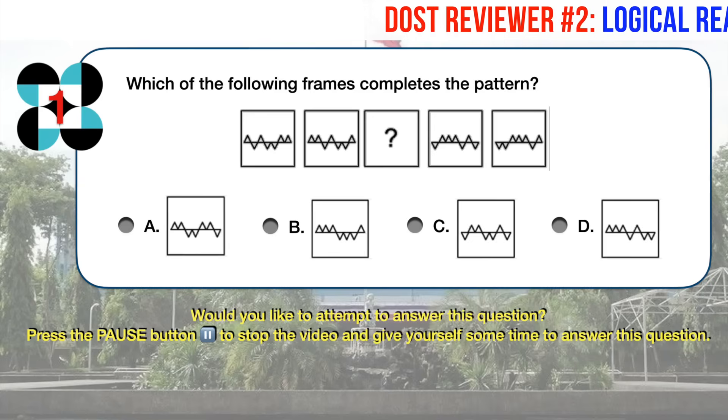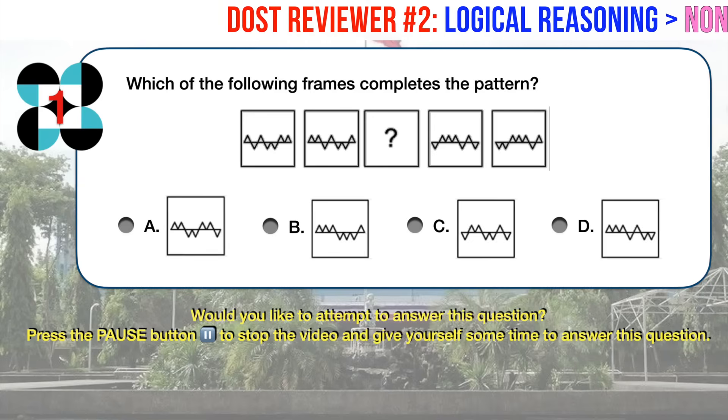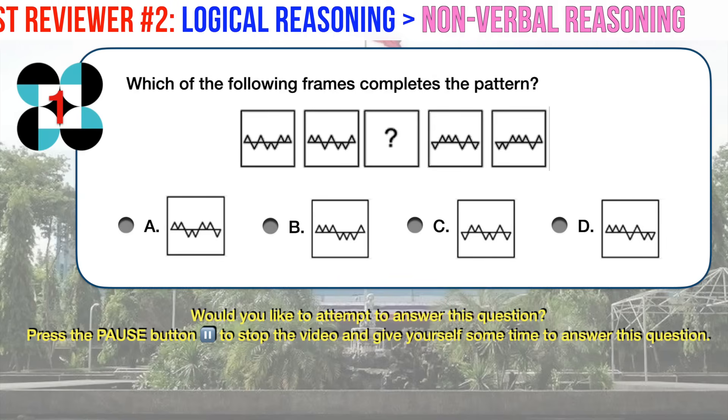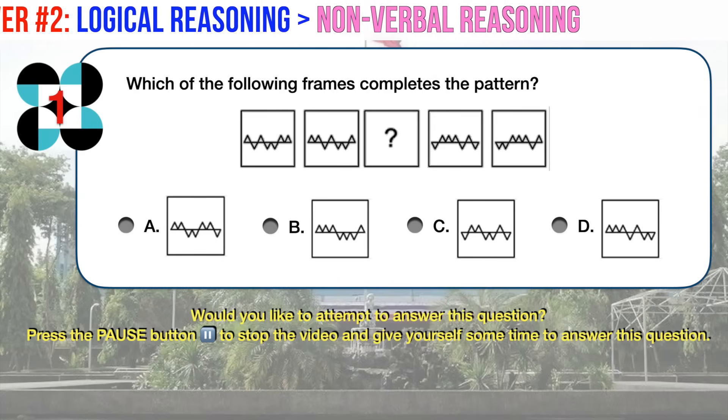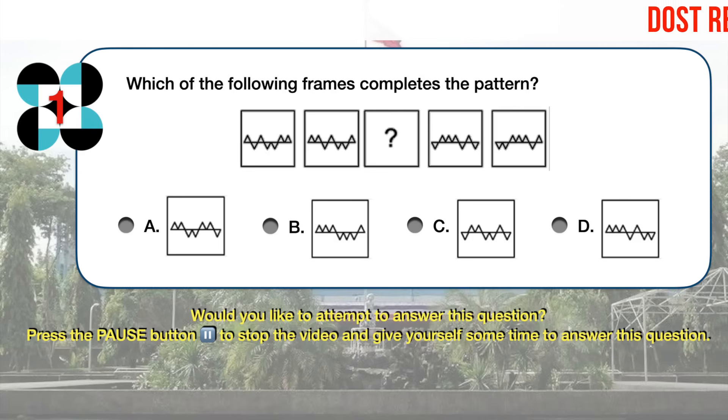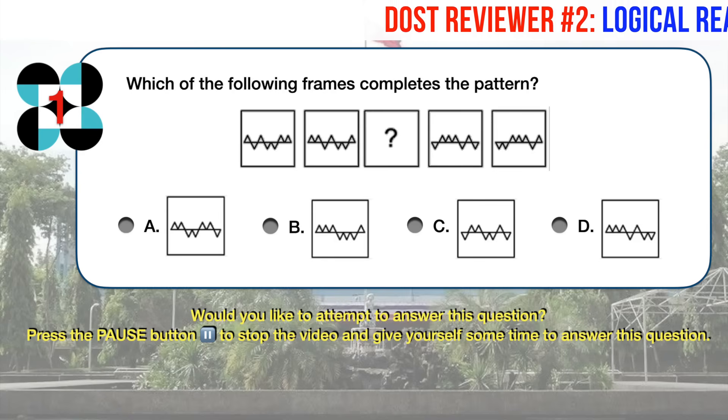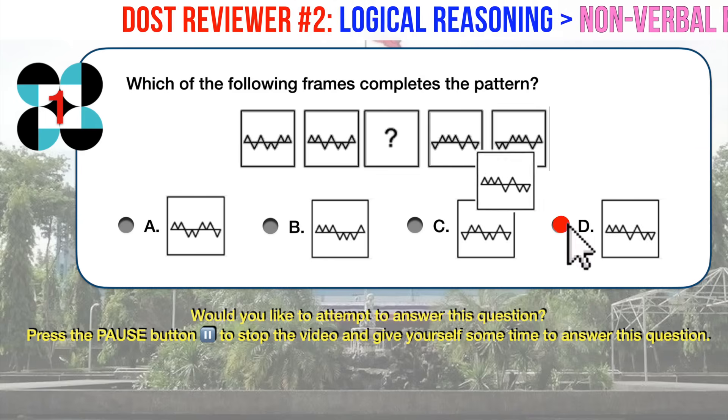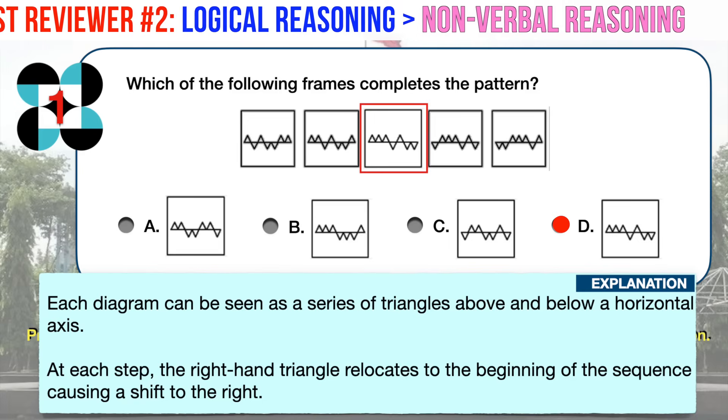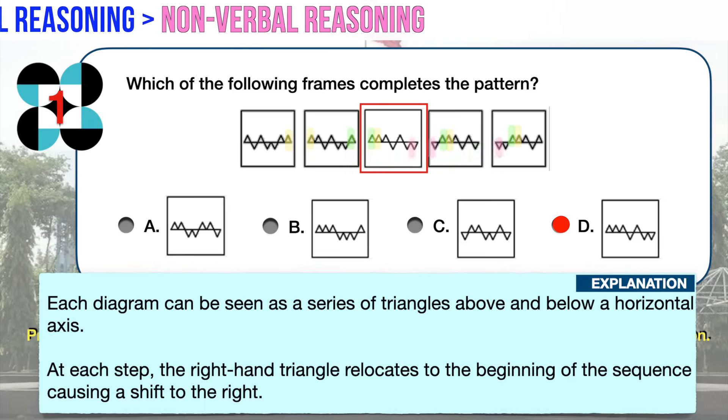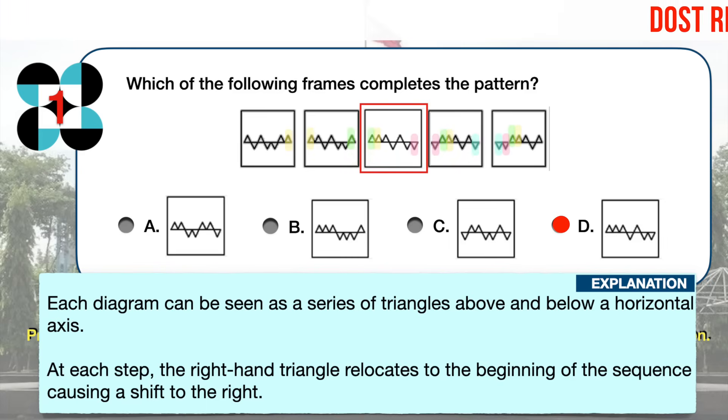Nonverbal Reasoning Number One. Which of the following frames completes the pattern? The correct answer is D. Each diagram can be seen as a series of triangles above and below a horizontal axis. At each step, the right-hand triangle relocates to the beginning of the sequence causing a shift to the right.